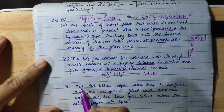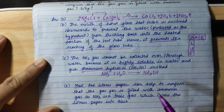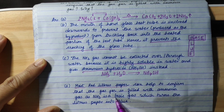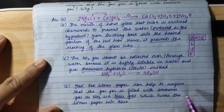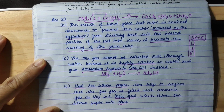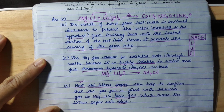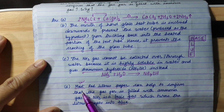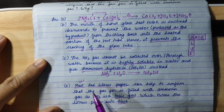Moist red litmus paper is used. It can help to confirm the gas jar is filled with ammonia. As ammonia is a basic gas, it turns moist red litmus paper into blue. The moisture is compulsory because the ammonia first dissolves in the moisture to form ammonium hydroxide, which is a weak base, and this changes the red litmus paper to blue.